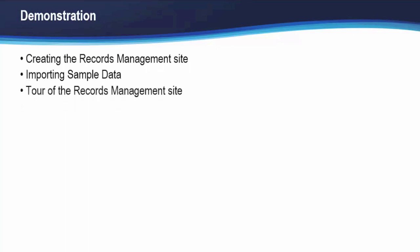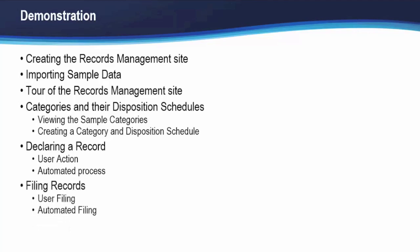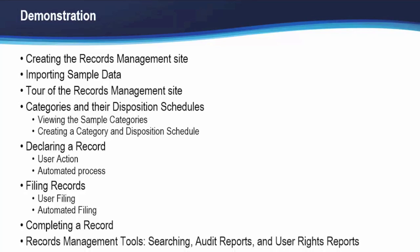Before moving into our demonstration, I want to go over the topics we'll cover today. We'll start with the creation of the records management site, followed by how to import sample data. Then we'll have a tour of the records management site itself, followed by discussion of categories and their disposition schedules. We'll create our own category and disposition schedule, then demonstrate declaration of a record — both user action and automated process — and the process of filing records using both user filing and automated filing. We'll go through completing a record and finally talk about records management tools including search, audit reports, and user rights reports.